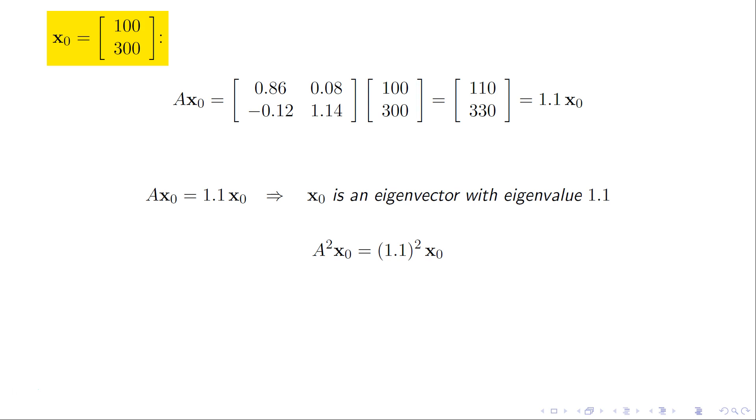And subsequent multiplications by A again and again and again are just going to have a 1.1 raised to the nth power in front of that x0. And that's indeed what we call exponential growth. Both the coyotes and the rabbits would experience exponential growth.